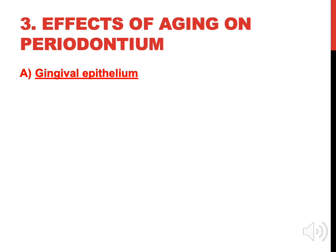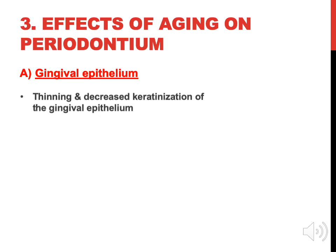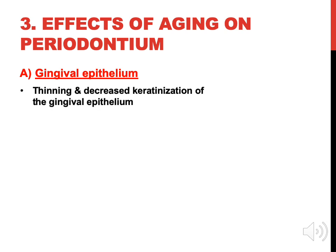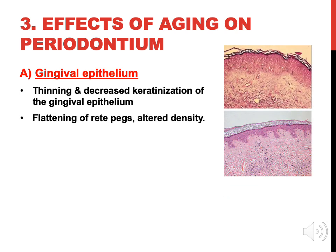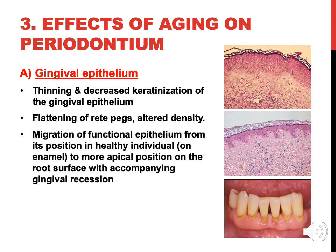Effect of aging on the periodontium: gingival epithelium undergoes thinning and decreased keratinization. There is flattening of rete pegs with altered density, and migration of junctional epithelium from its position in healthy individuals on enamel to a more apical position on the root surface, combined with gingival recession.